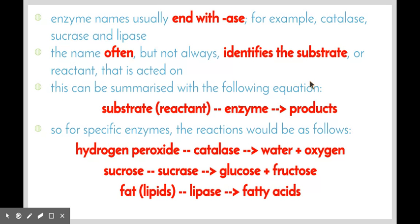Enzyme names usually end with the suffix "-ase". For example, catalase, sucrase and lipase. The name often, but not always, identifies the substrate or the reactant that the enzyme acts on. This can be summarized with the following equation. The substrate reactant with the enzyme acting on it brings about the products. We can have a reaction where the substrate is broken down into two products, or we can have a reaction where two or more substrates are brought together to create a product.